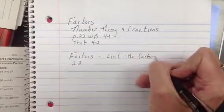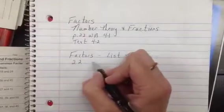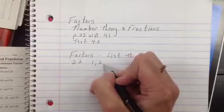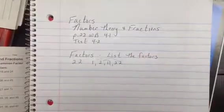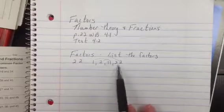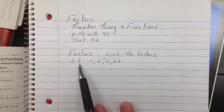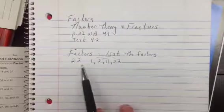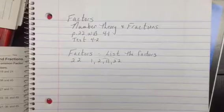Now what usually happens is when I say list the factors, students aren't real certain what's going on. But then if I start to do something like this and I make what they call the little rainbows, oh yeah, factors, I remember that. So what are all of the things that can be multiplied together to get this product, right? So 1 times 22 is 22, 2 times 11 is 22. That's listing the factors.